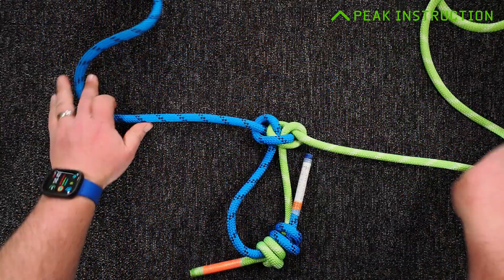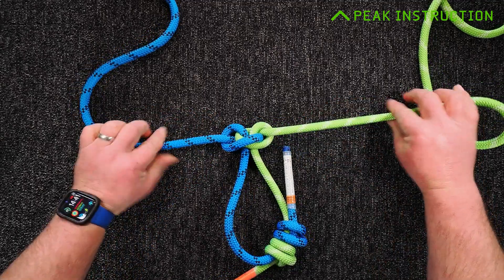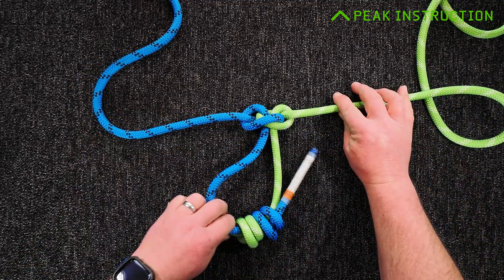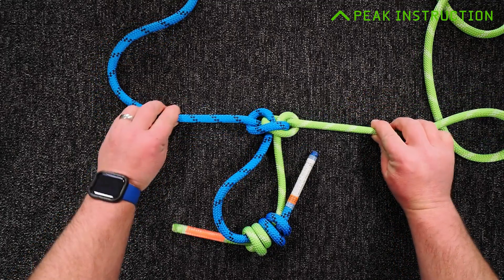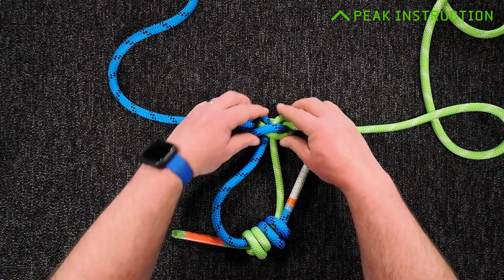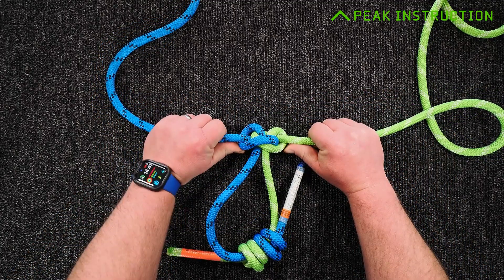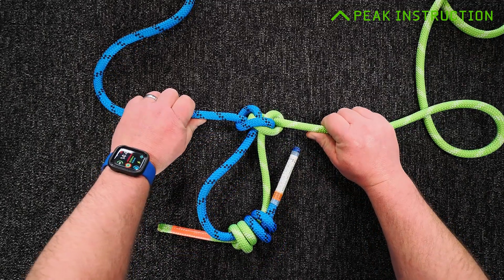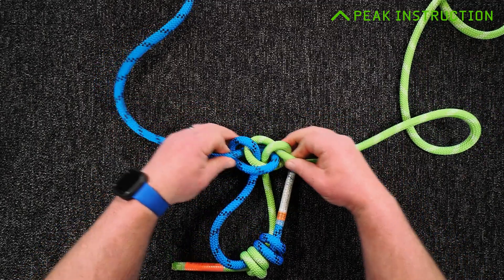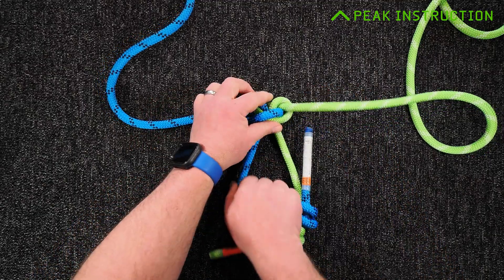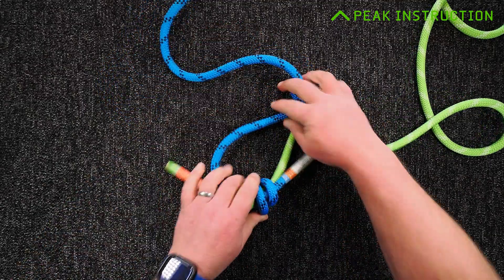This is very secure when we're hanging on it. Load traveling through the loop is relatively isolated, so it's this knot that's acting as the join and taking all the load. The butterfly is a lot easier to undo after heavy loading than the fisherman's bend would be.